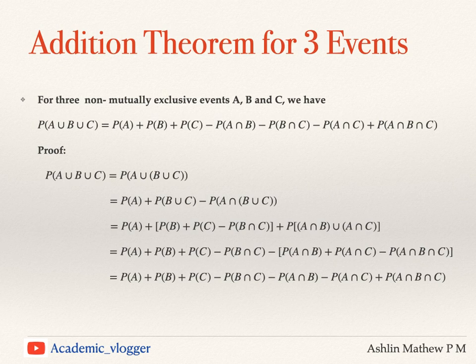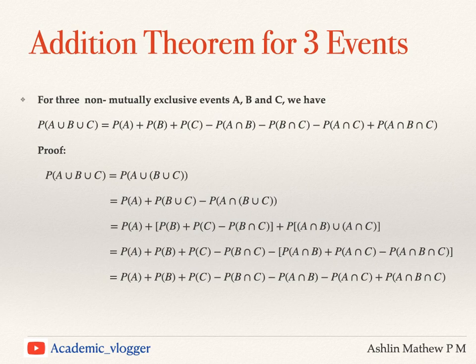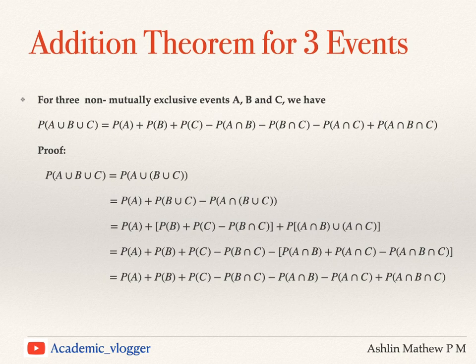We open the bracket: A intersection (B union C) can be written as (A intersection B) union (A intersection C). There we have two events — A intersection B and A intersection C — and we apply the addition theorem for two events again. At each stage we apply the addition theorem for two events wherever possible, and then open the brackets to arrive at the final result.